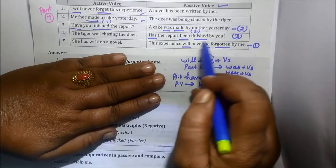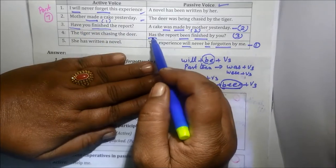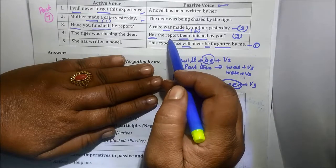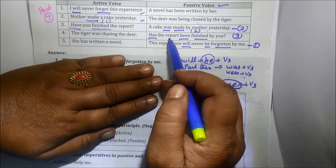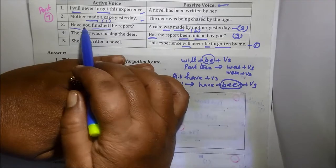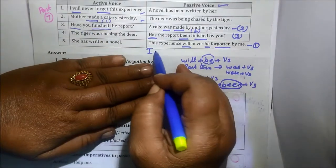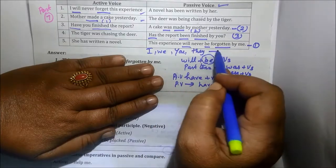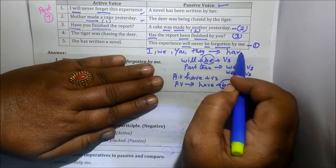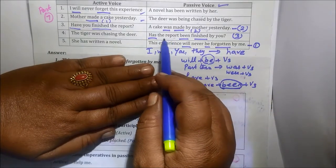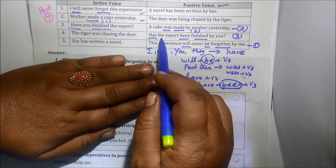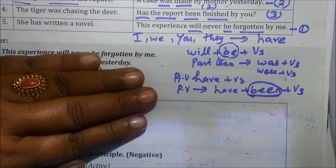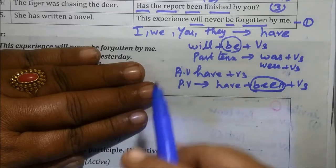Have is the same as has. Report is singular, so we use 'has.' For pronouns like I, we, you, they — we use the plural form 'have.' For singular subjects, we use 'has.' So we are using the singular form here.